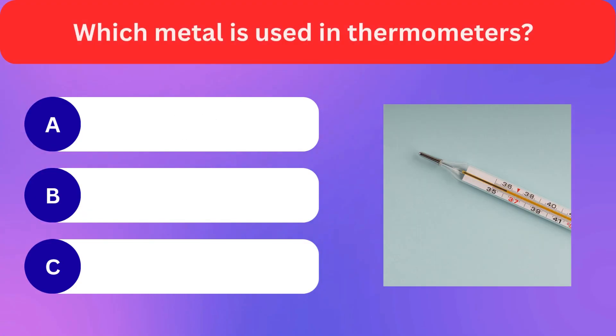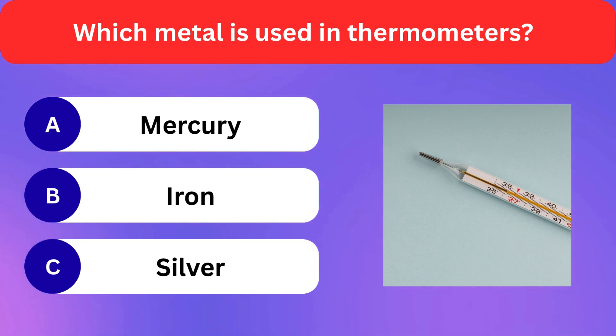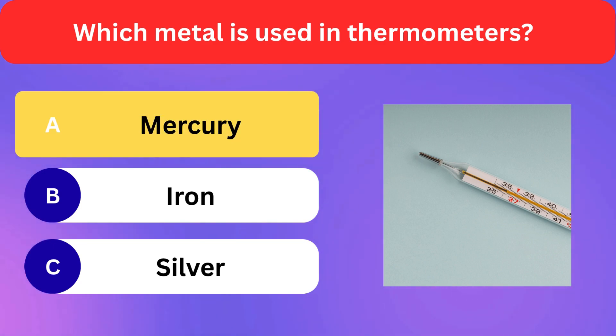Which metal is used in thermometers? Mercury, Iron, Silver. Correct answer is mercury.